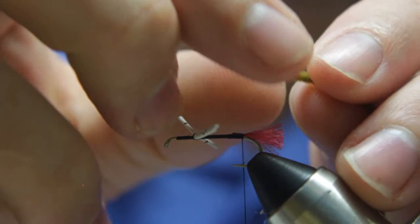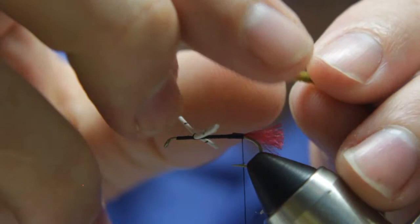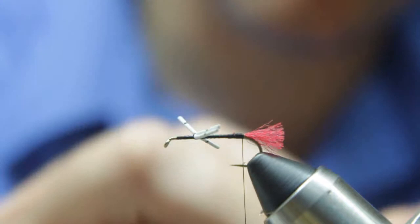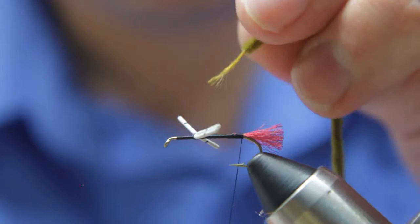I've got an olive chenille for the abdomen, like I said earlier. And what I'm going to do is I'm going to pull about the amount between the legs and where the thread is. And I'm just going to strip the fur off the chenille. And then I'm going to wrap this piece into it.